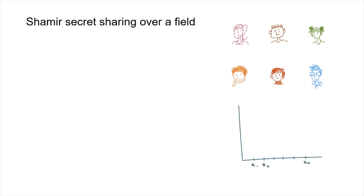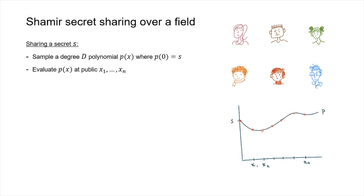Much of what we're going to talk about is going to be based on Shamir secret sharing, so let's do a quick recap. To share a secret, we sample a random polynomial where the y-intercept is going to be the secret value that we want to share. Each party is going to have a distinct x_i associated with them, and their share is going to be the evaluation of the polynomial at their x_i.